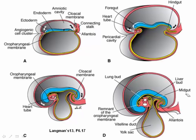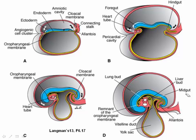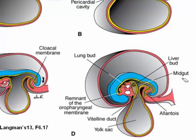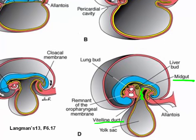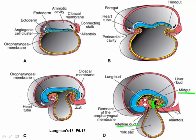With continued growth of the embryo, an increasingly larger portion of the yolk sac is incorporated into the fore and hindgut regions. As demonstrated in Image D, the open part of the yolk sac between the fore and hindguts is the midgut. The midgut initially communicates with the yolk sac by way of a broad vitelline duct. The vitelline duct narrows as growth of the embryo continues, and along with the connecting stalk and the allantois will form the bulk of the tissues of the umbilical cord.